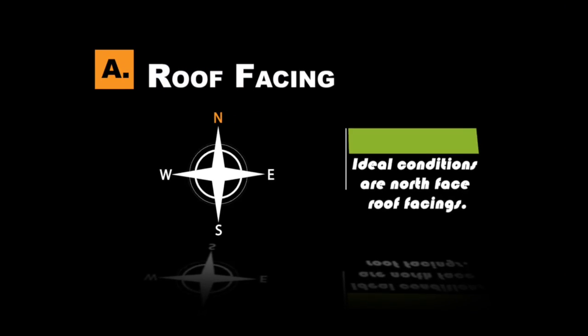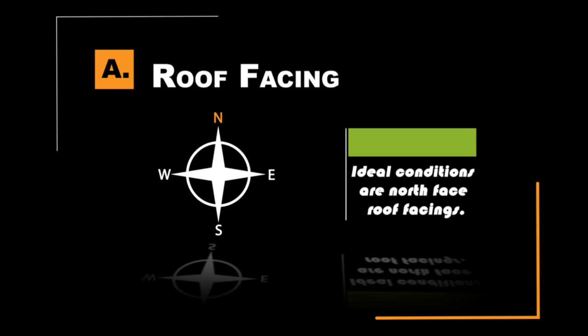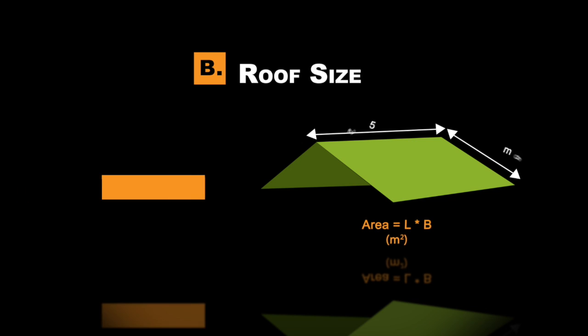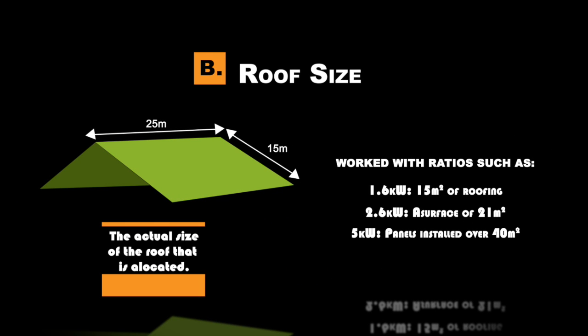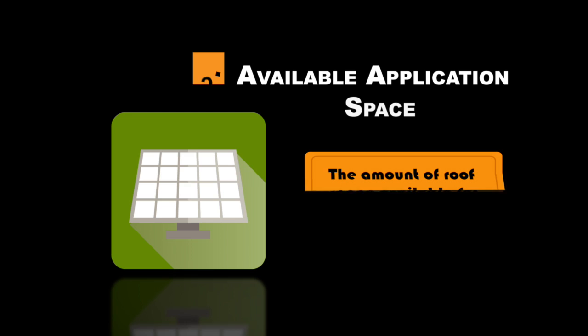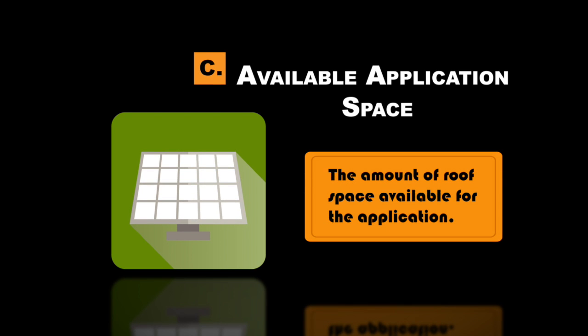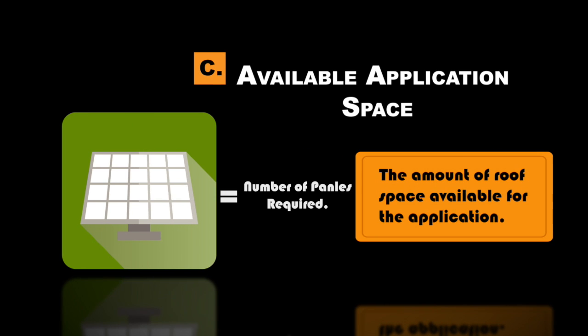Initial assessment of any potential plant for solar application would involve roof facing — ideally with a north-facing roof. We look at the actual size of the roof allocated, the amount of roof space available for the application, and the number of panels that the plant would require.